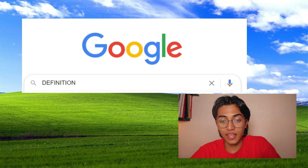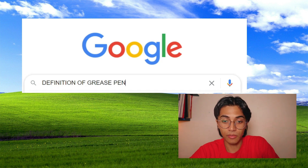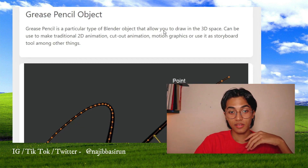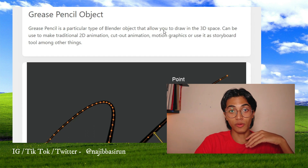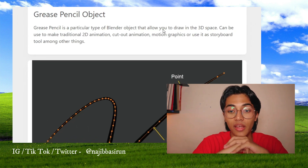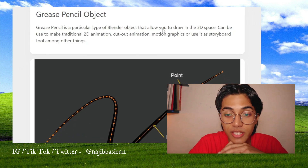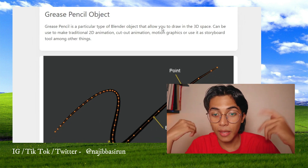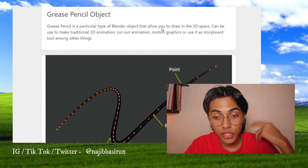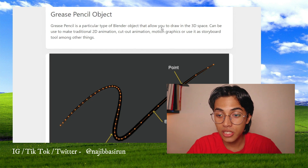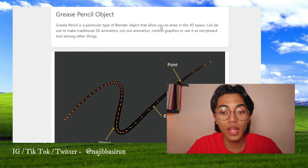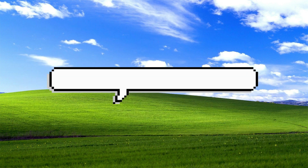It is a technique called Grease Pencil in Blender. What Grease Pencil is, from the Blender website — it's said that Grease Pencil is a particular type of Blender object that allows you to draw in 3D space. It can be used to make 2D animation, cutout animation, motion graphics, or use it as a storyboard tool, among other things.